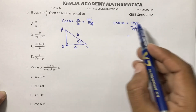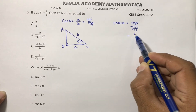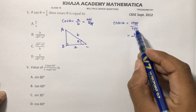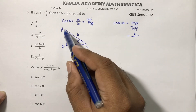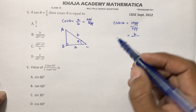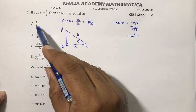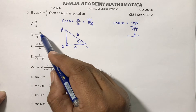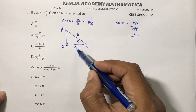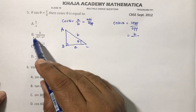We have hypotenuse B, but we don't have the value of opposite yet. Looking at the options, B by A is not possible because A is the adjacent side, not the opposite. We need to calculate the opposite using Pythagoras theorem.